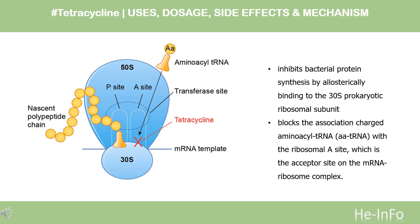Mechanism of Action: Tetracycline passively diffuses through porin channels in the bacterial membrane and reversibly binds to the 30S ribosomal subunit, preventing binding of tRNA to the mRNA-ribosome complex, and thus interfering with protein synthesis.